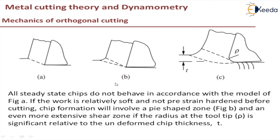In the case of figure B, the shear zone is in a pi shape. And as you increase the tool radius in figure C, you can see the deformation zone — the primary shear zone — where the shape is not uniform. This is the model on orthogonal cutting.